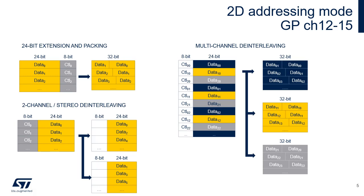The destination can be programmed as a forward burst for best write performance. The second use case consists of de-interleaving stereo audio samples into two separate buffers, one containing the right samples and the other the left samples.